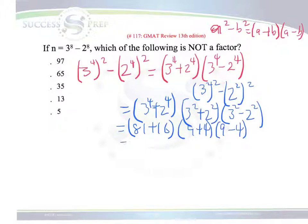So this ends up giving us 97, ends up giving us 13, ends up giving us 5.